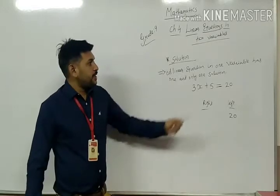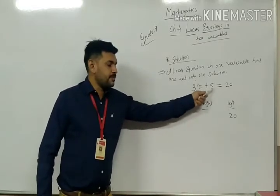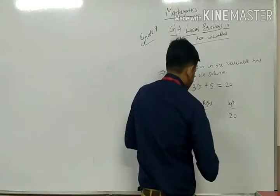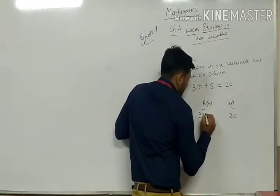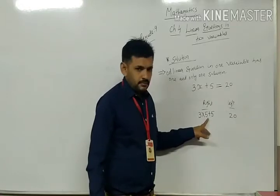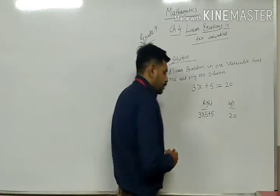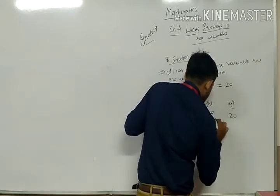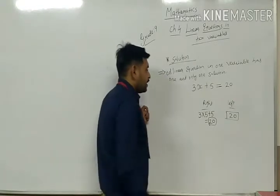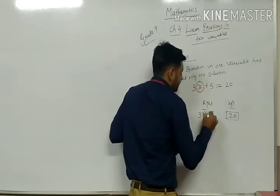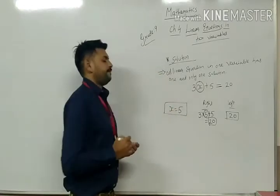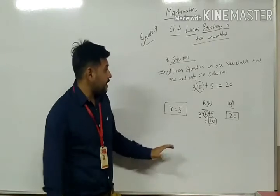The right side is 20, so we want the left side to also equal 20. If we substitute x equals to 5: 3 into 5 plus 5 gives 15 plus 5 equals 20. The equation is balanced — so the solution is x equals to 5.